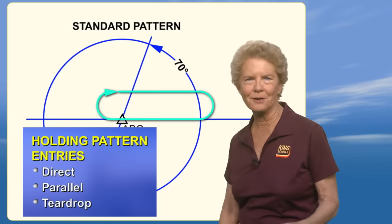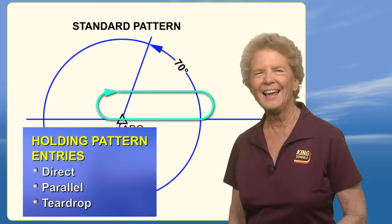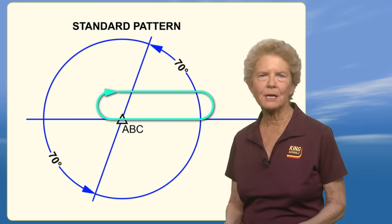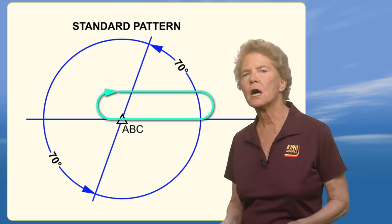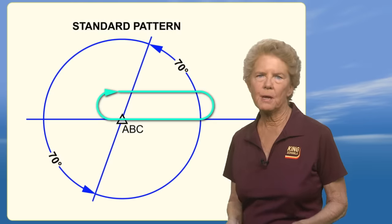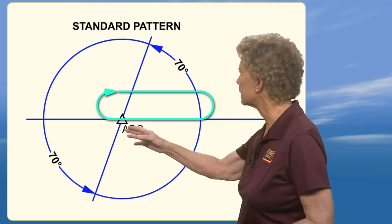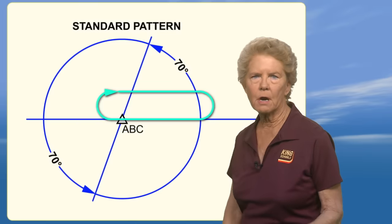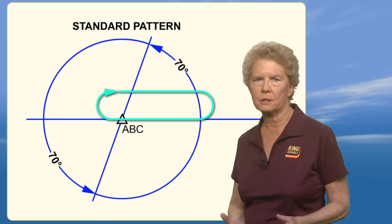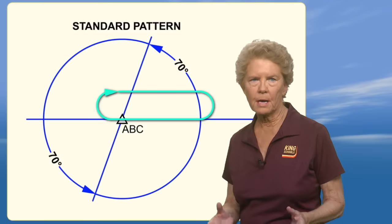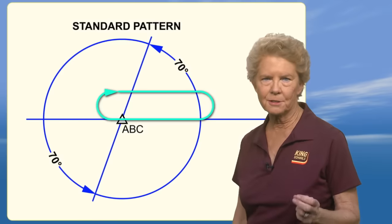Kind of like when your lawyer recommends, 'I suggest you stop talking.' The FAA divides the airspace around a holding fix into three sectors. The type of entry you make is based on which of these sectors you fly through as you reach the holding fix. When you're trying to figure out which holding pattern entry to make, the easiest thing to do is first divide the holding pattern into the three sectors for the three different types of entries.